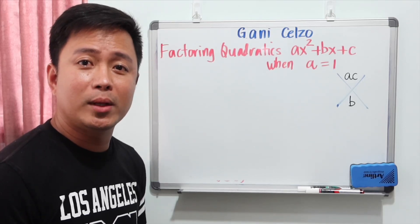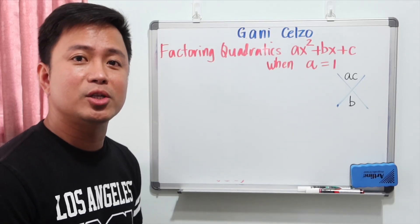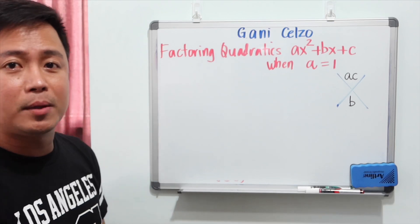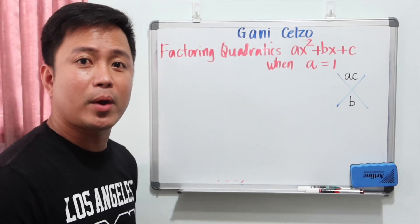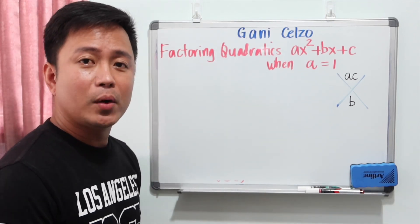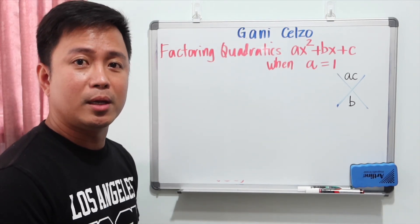Today we will learn how to factor quadratics in the form ax squared plus bx plus c when a is equal to 1.